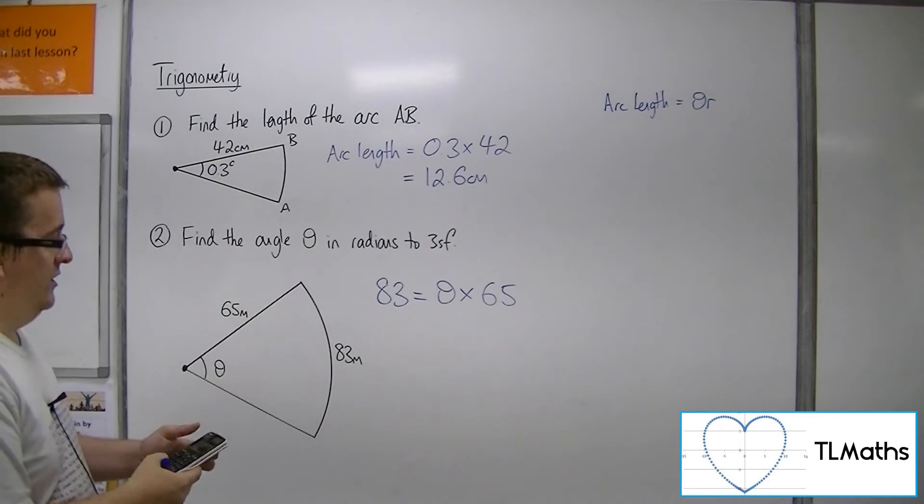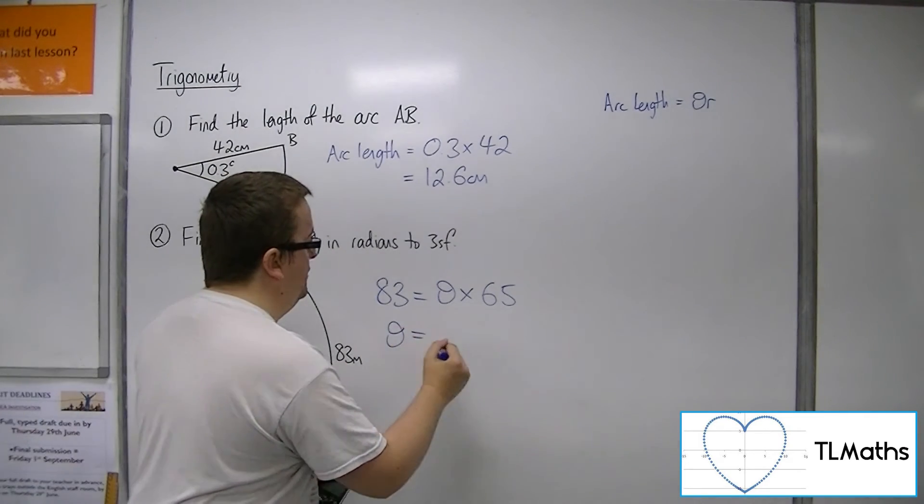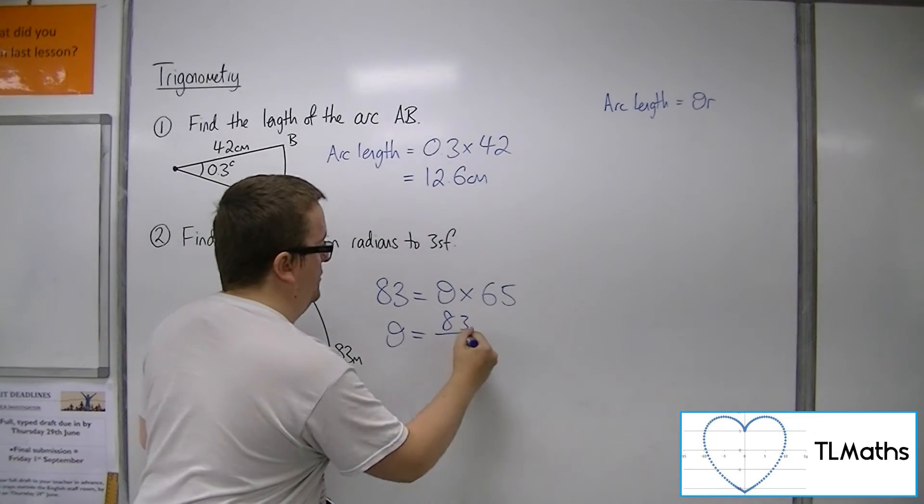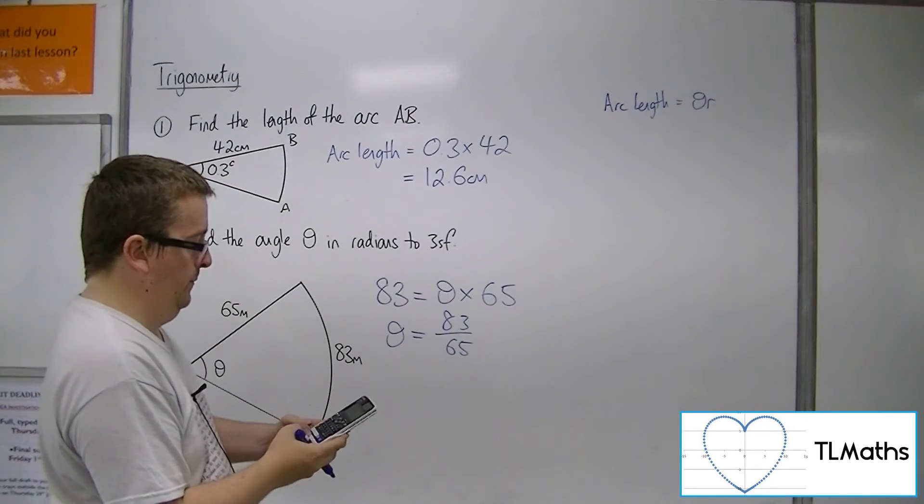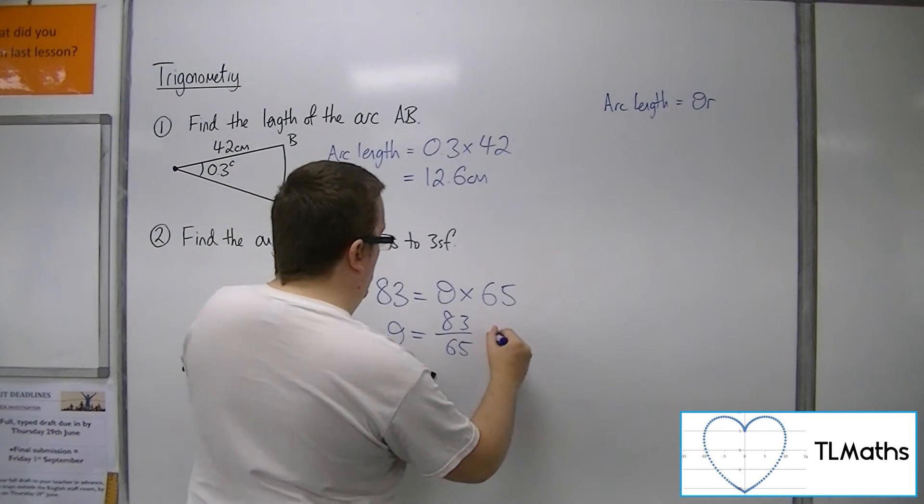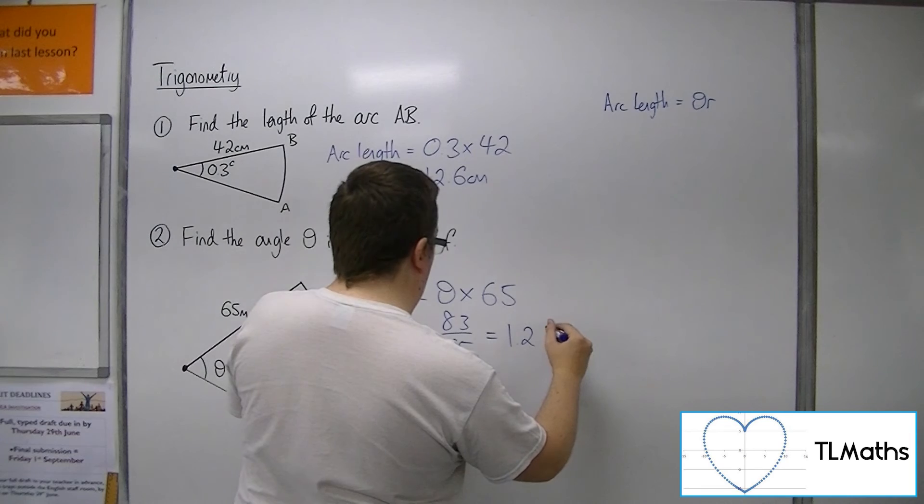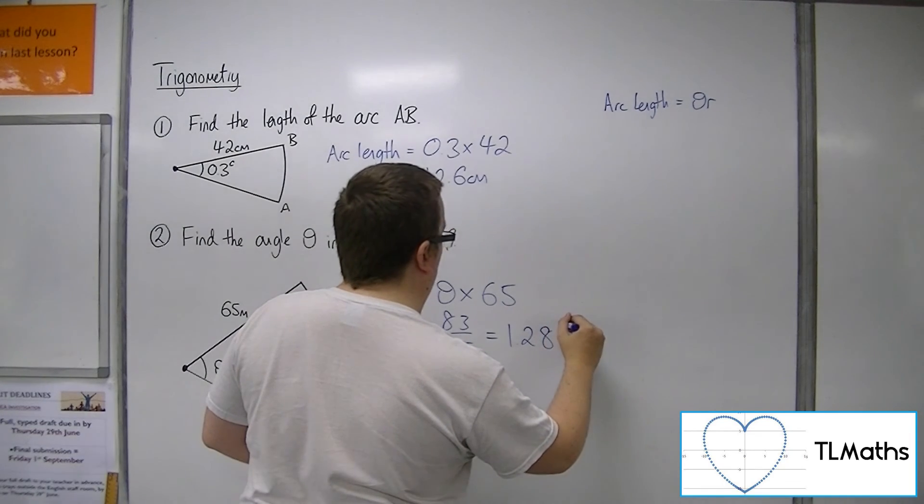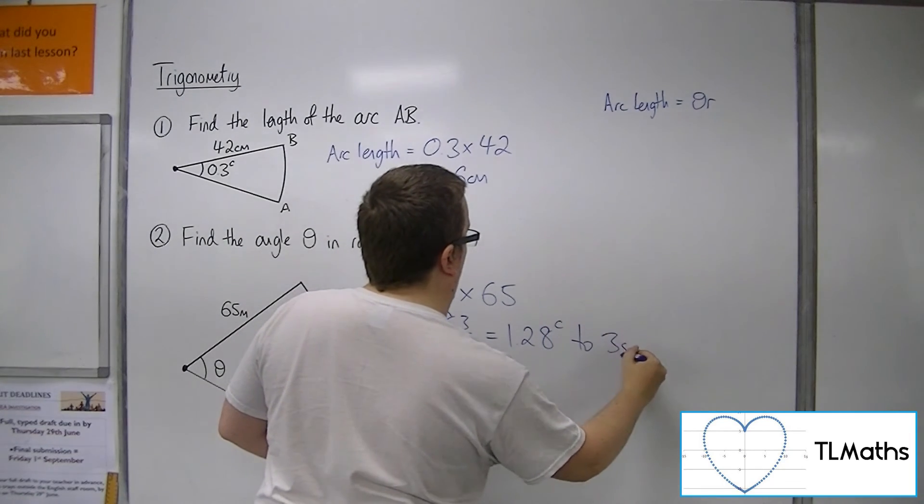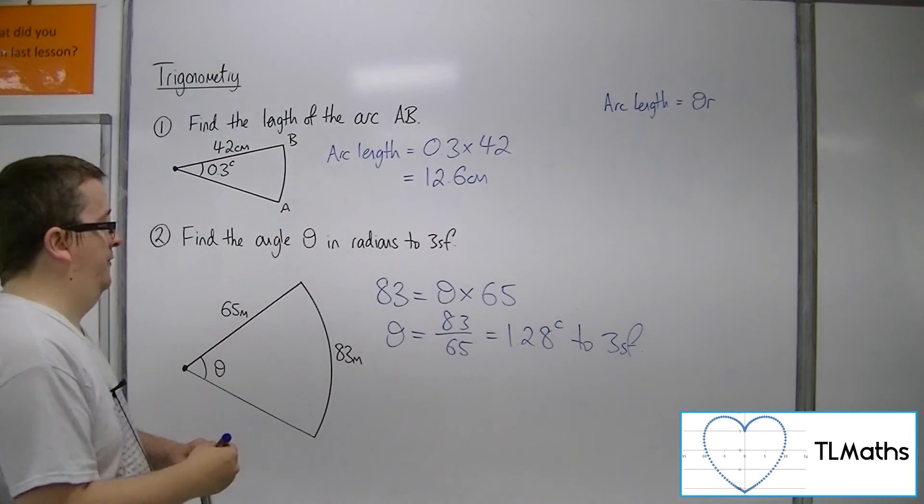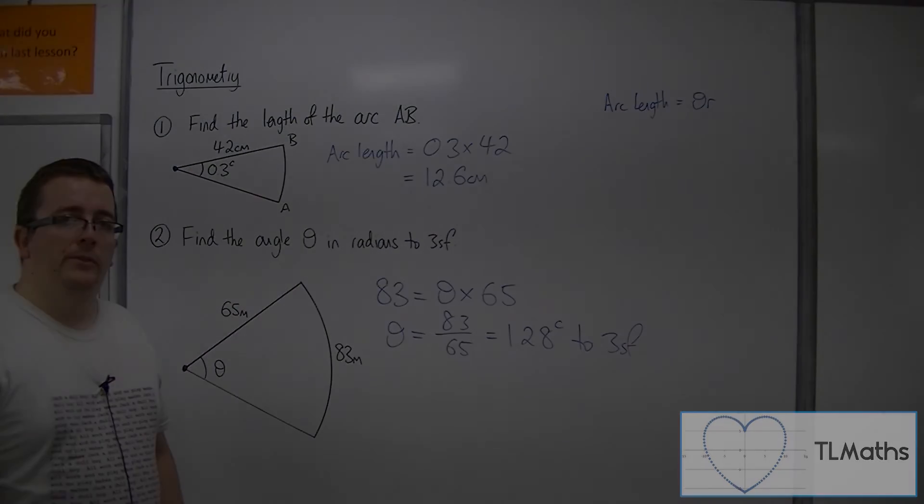So I need to do 83 divided by 65, and that gets me 1.28 radians to three significant figures. And that's the answer to number two.